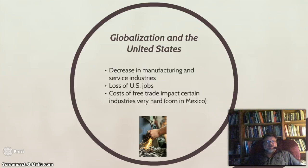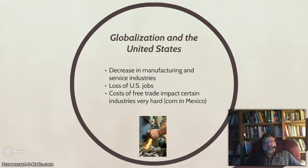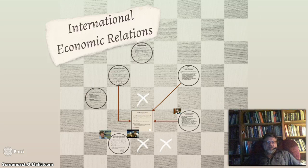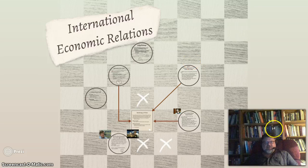The upside of globalization is that people can buy cars, clothing, and other goods more cheaply — for example, Nikes produced in China are much cheaper than if produced in South Carolina. That is a quick overview of international economic relations from Chapter 20 of Hunt and Colander's Introduction to Social Science. I hope you enjoyed it, read the chapter, and do well on the quiz. Thank you very much.